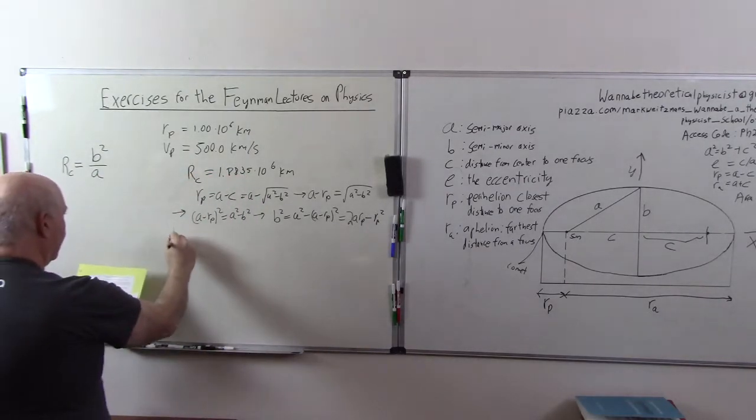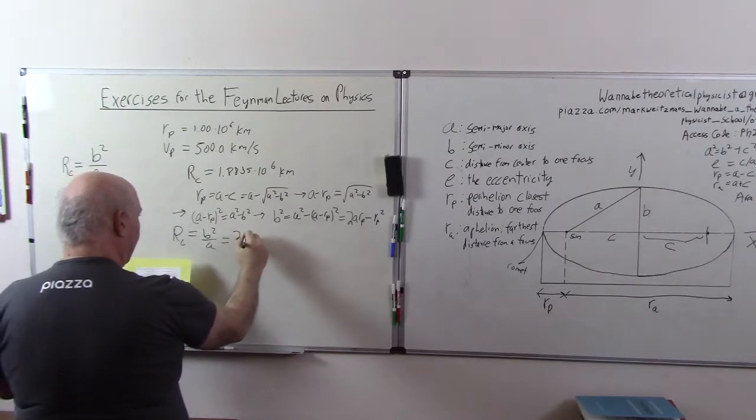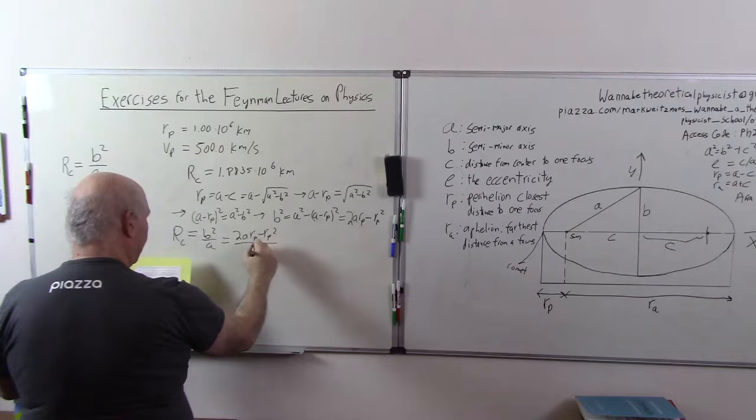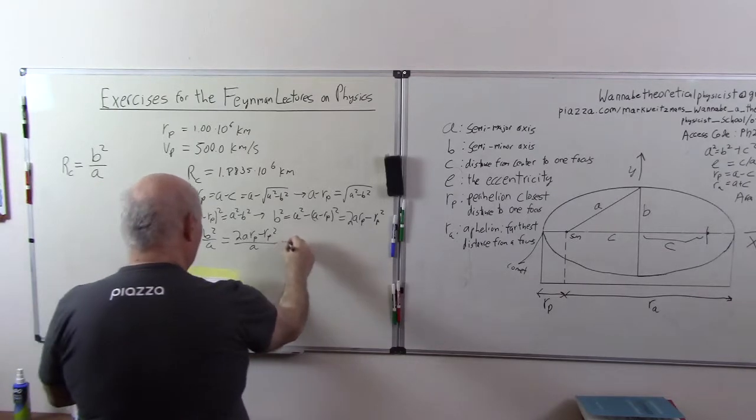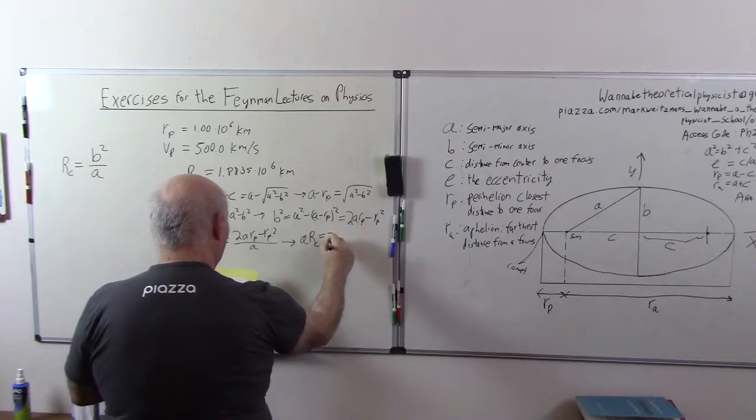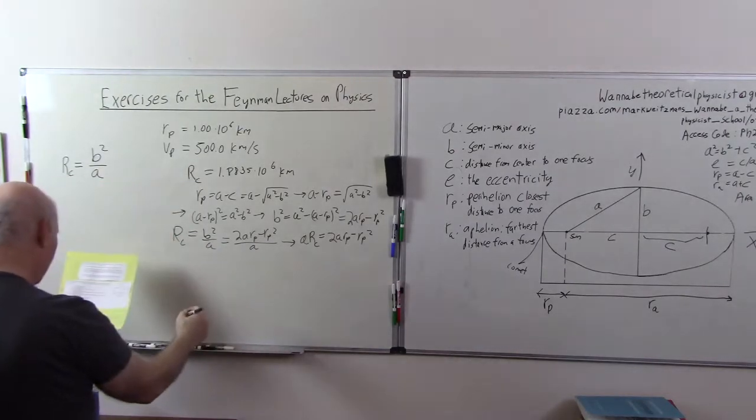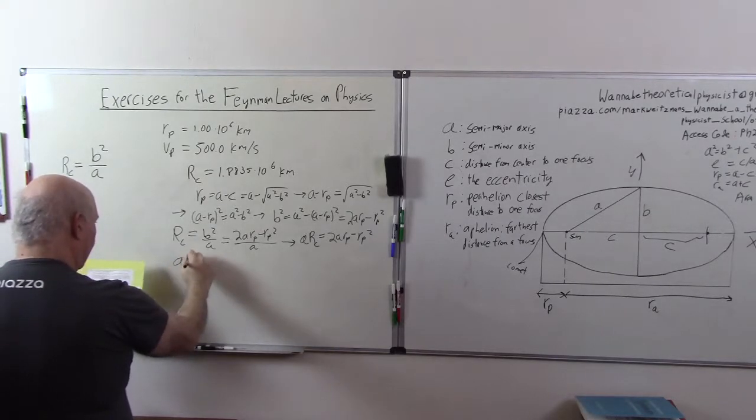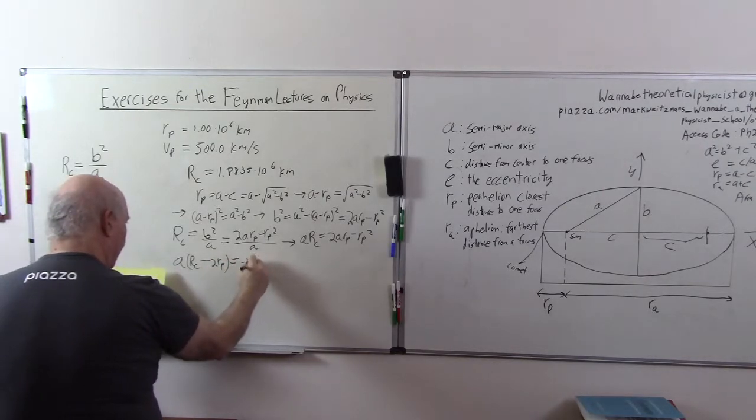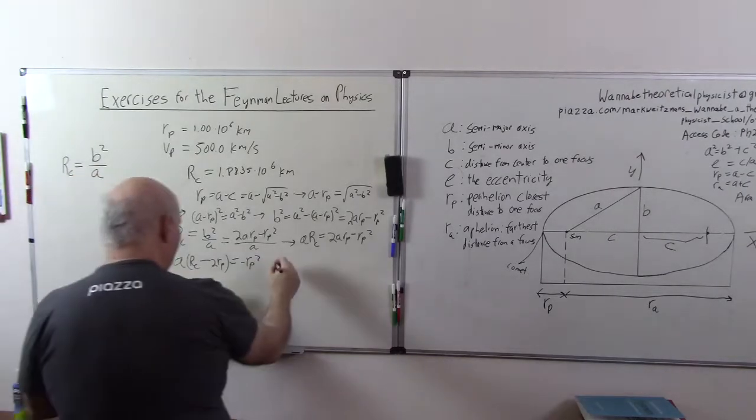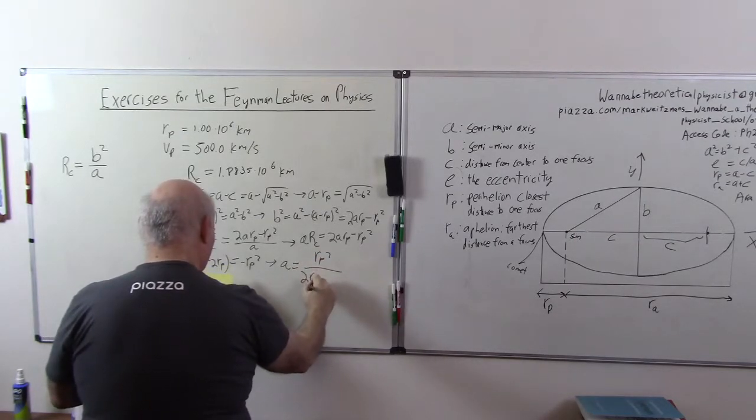Now, RC, which we have, is equal to B squared over A is equal to 2ARP minus RP squared over A. This implies that A times RC is equal to 2ARP minus RP squared. We're going to factor out the A, so we're going to get A times RC minus 2RP is equal to minus RP squared. Finally, we get A is equal to RP squared over 2RP minus RC.